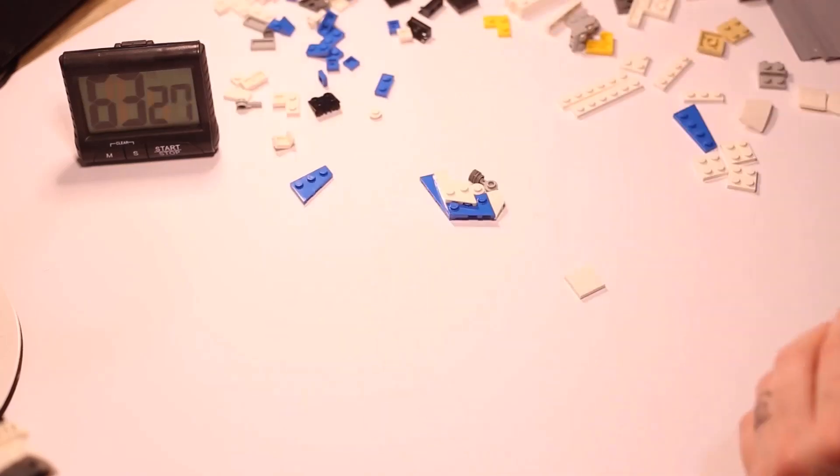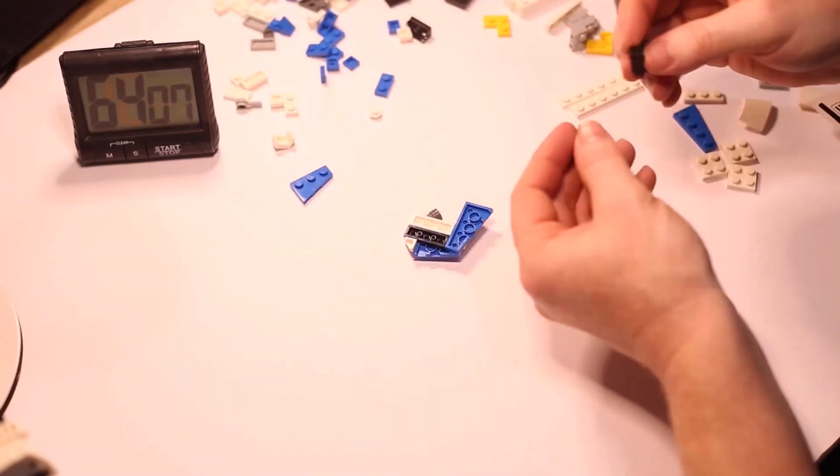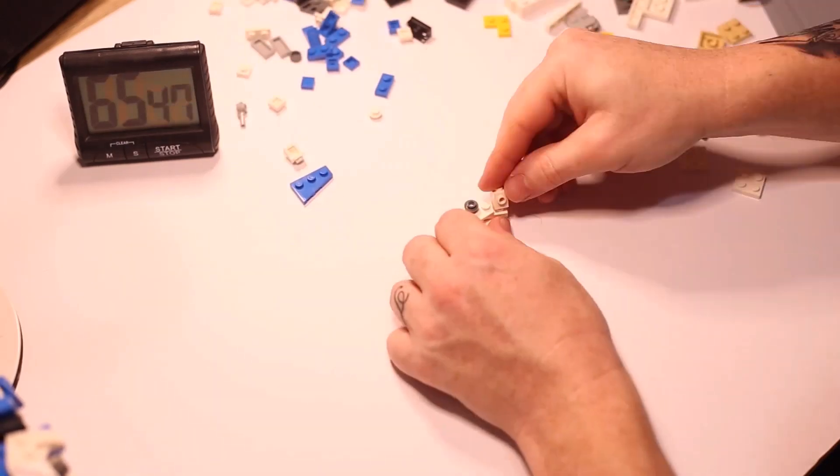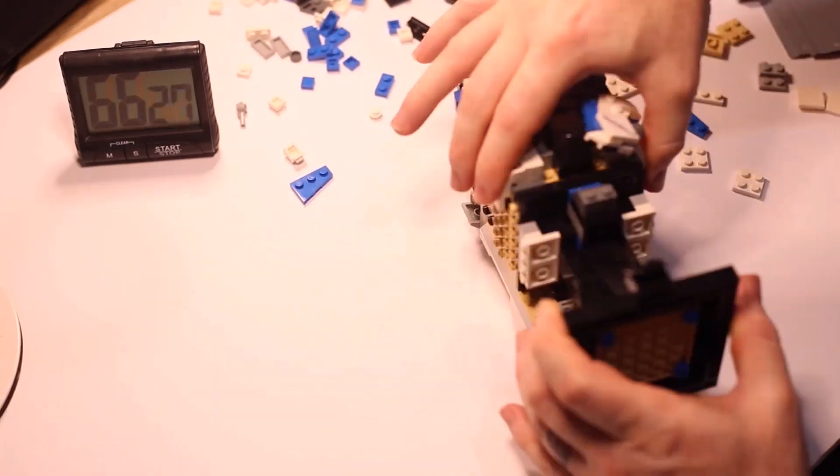The air tubes on this model look awesome as well. They all flow together pretty good for LEGO parts. Definitely the best part of the model. Also, I like the eye visor. It looks pretty spot-on to the show.